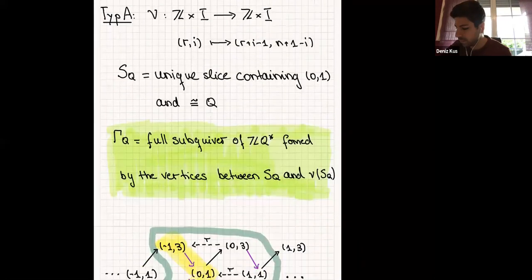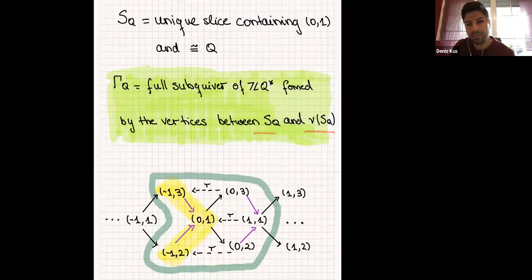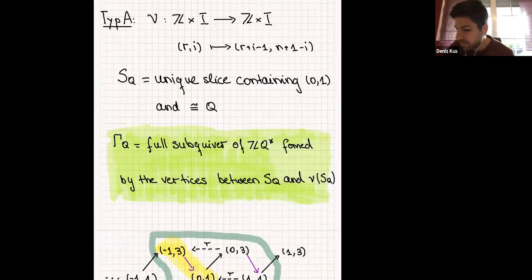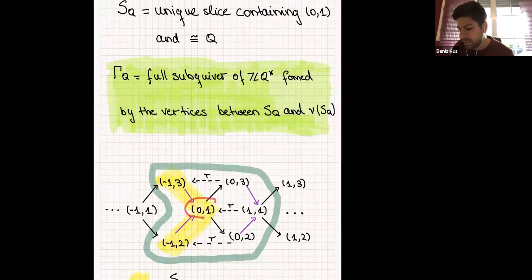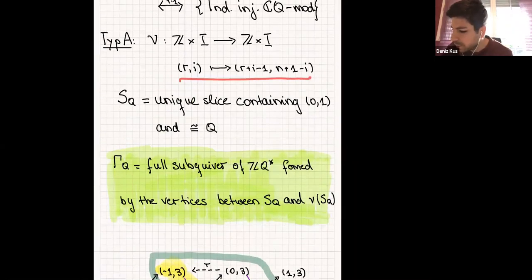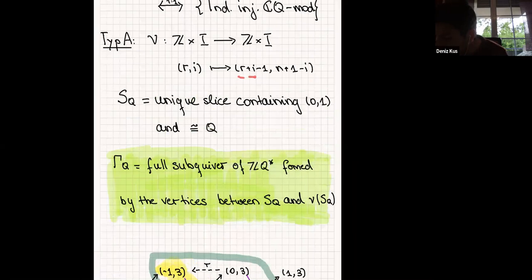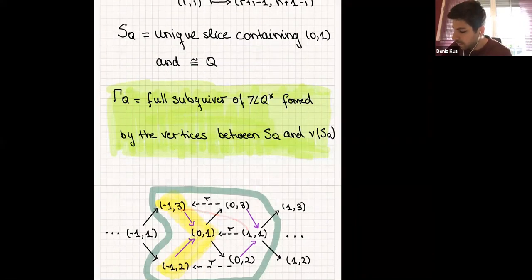Here we are — this was S_Q and this was the infinite quiver. Gabriel tells us to look at S_Q and ν(S_Q). We calculate ν(−1, 3): plugging in gives −1 + 3 − 1 = 1, and n+1−3 = 4−3 = 1, so (−1, 3) maps to (1, 1). Repeating for the others: (0, 1) goes to (0, 3), and (−1, 2) goes to (0, 2). The full subquiver formed by vertices between S_Q and its image gives exactly this part.